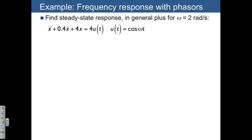Let's do another example, this time of a second-order differential equation: x double dot plus 0.4x dot plus 4x equals 4u of t.